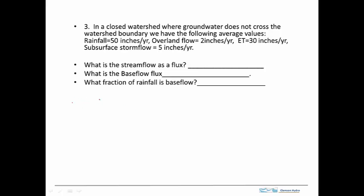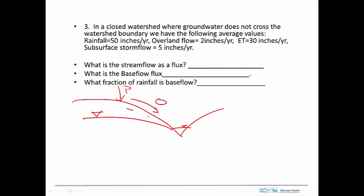We'll start off with a sketch. Here's the watershed in cross section. Here's the water table. Here's the stream. And we're given the precipitation, overland flow, subsurface storm flow, and ET. And we're asked to get the runoff — that's what I mean by RU, the runoff.